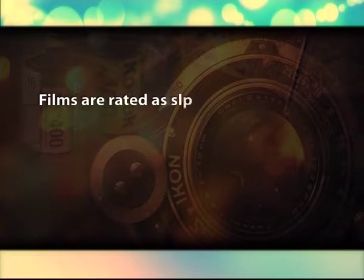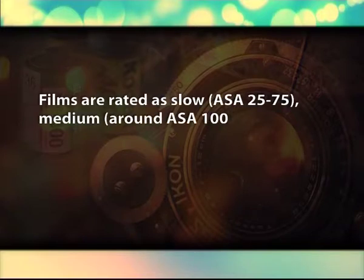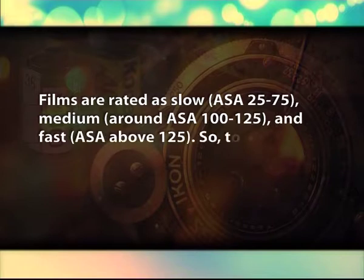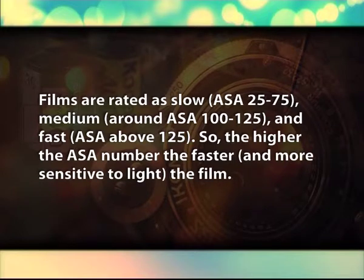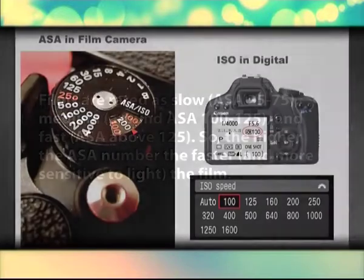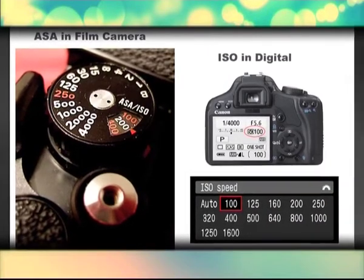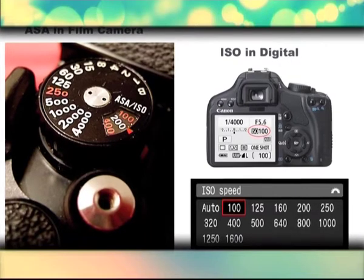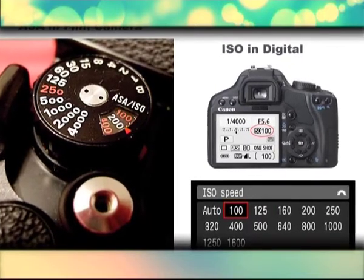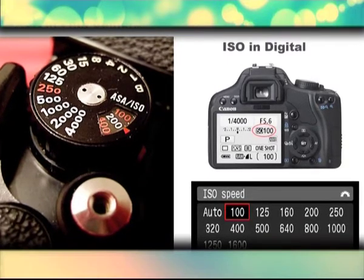Photographic Characteristics — Number 1: ASA Rating or Speed. This is a rating by the manufacturer of the particular film's relative sensitivity to light; another term for this is film speed. Films are rated as slow (ASA 25–75), medium (around ASA 100–125), and fast (ASA above 125). The higher the ASA number, the faster and more sensitive to light the film. When you set the ASA number on your camera, you are telling the meter how fast your film is; so the first step to good exposures is setting the ASA on your camera correctly.